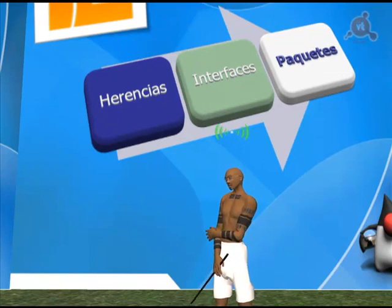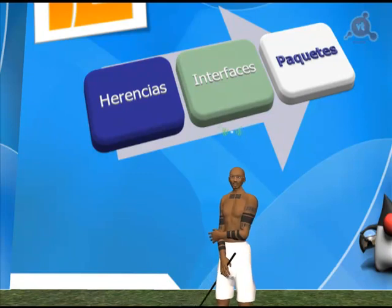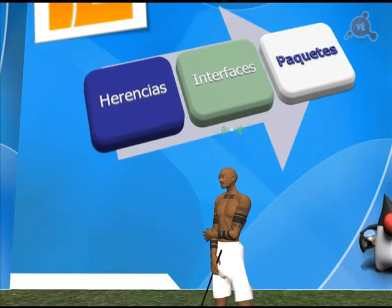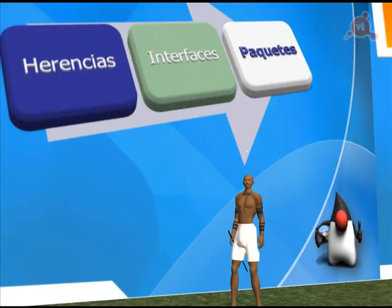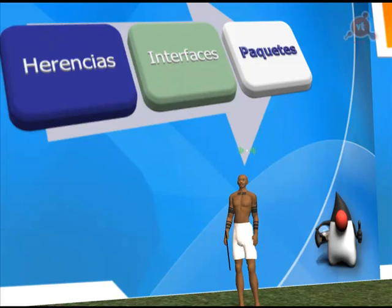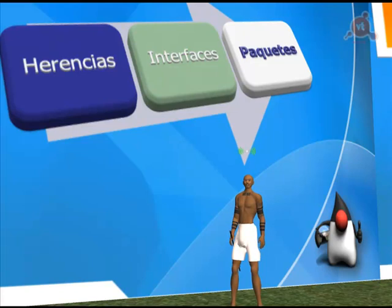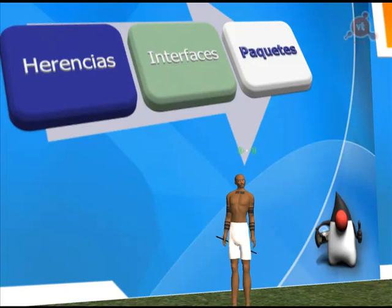Una introducción a la programación orientada a objetos en Java no está completa sin ver tres conceptos más: las herencias, las interfaces y los paquetes. Se trata de tres de los mecanismos que Java utiliza para organizar las clases y su comportamiento. De momento los estamos explicando aunque usemos también algún ejemplo práctico. Más adelante en el curso los veremos en muchas ocasiones a la hora de escribir código.